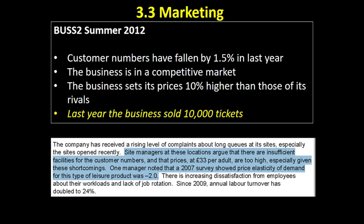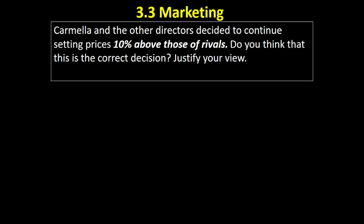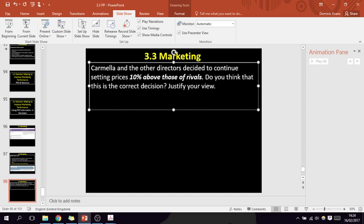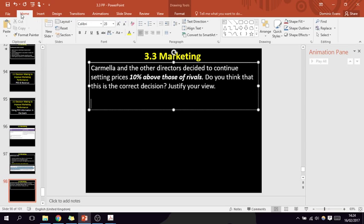Bearing these points in mind, the question is: should Carmela and the other directors continue setting prices 10% above those of rivals? Do you think that this is the correct decision — justify your view. The structure would be the same as any evaluation question worth 16 or 20 marks: a definition, reasons the directors made the correct decision in a paragraph, then reasons they did not.